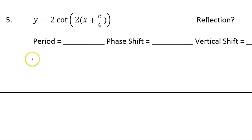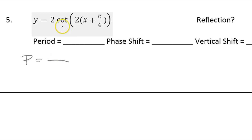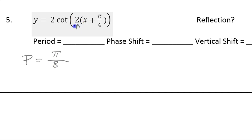Let's start with the period, as we often do. We know that the period is always the regular period divided by the B value. For tangent and cotangent, the normal period is pi. So instead of doing 2pi over B, we're just doing pi over B. In this case, the B value is just 2, so the period is going to be pi over 2.